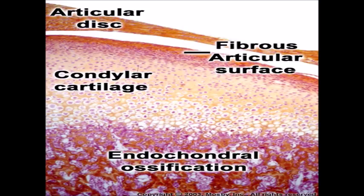This image is for the developing condyle. As discussed in previous embryology sessions, the mandible develops by intramembranous ossification around Meckel's cartilage. Between the ages of 10 to 14 weeks, three new ossification centers appear: one in the midline symphysis, one in the coronoid process, and one in the condyle. The ossification in these areas is by endochondral ossification.